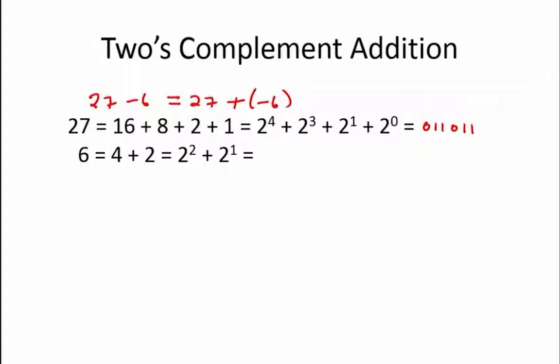6 is equal to 4 plus 2, which is equal to 2^2 plus 2^1. So its 6-bit binary representation is 000110. To find the representation of negative 6, we flip all the bits and add 1.